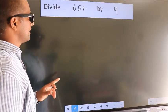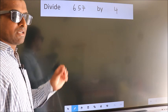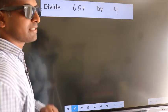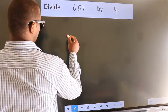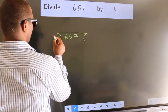Divide 657 by 4. To do this division, we should frame it in this way: 657 here, 4 here.